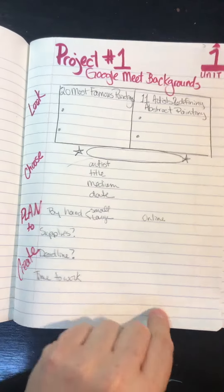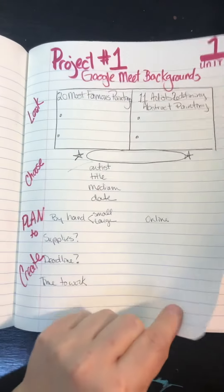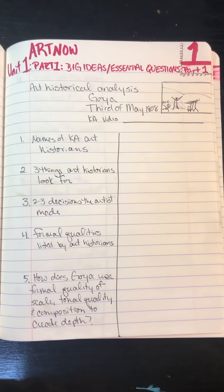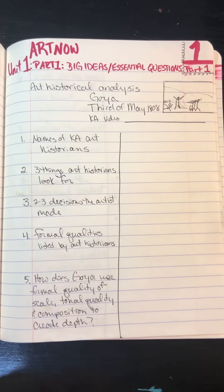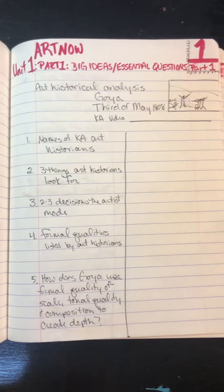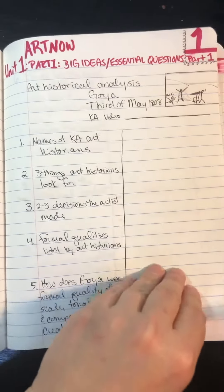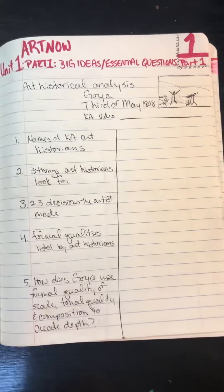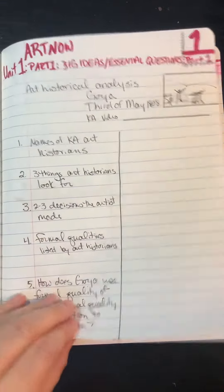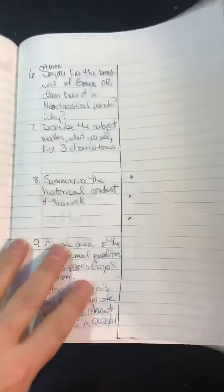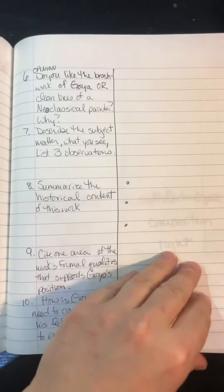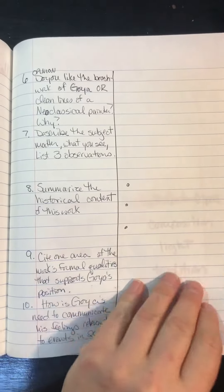These are my notes for the first part, and then I have the guided notes for the formal analysis of Francisco Goya's Third of May. I used column notes — you can use whatever you'd like. You could also do it digitally; the digital copy was assigned on Google Classroom.